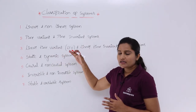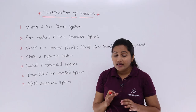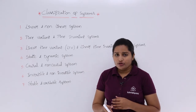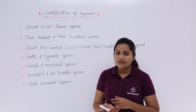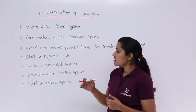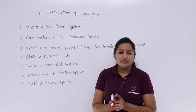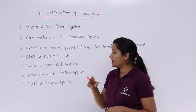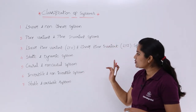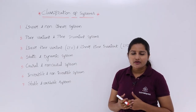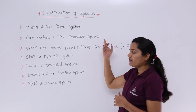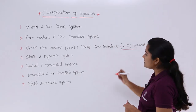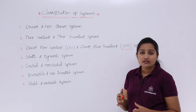Now coming to linear time variant and linear time invariant systems — these systems are very important throughout signals and systems. The second topic of signals and systems is LTI systems. A linear time variant system is one which satisfies both linearity and time variance. A linear time invariant system satisfies both linearity and time invariance. LTI systems are particularly very important from a signals and systems point of view.